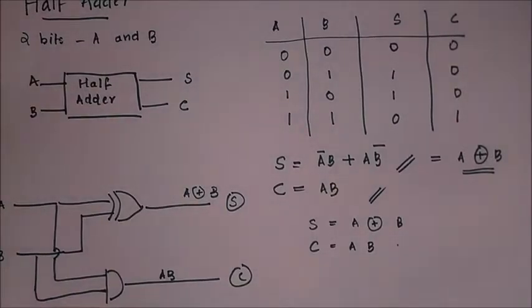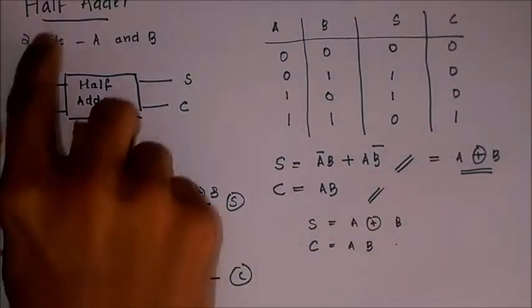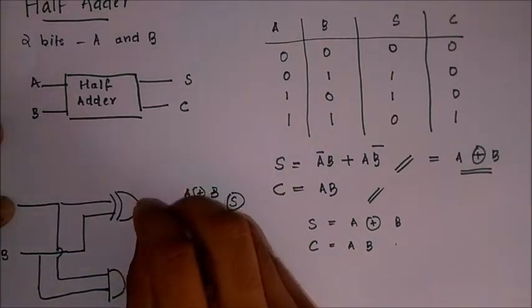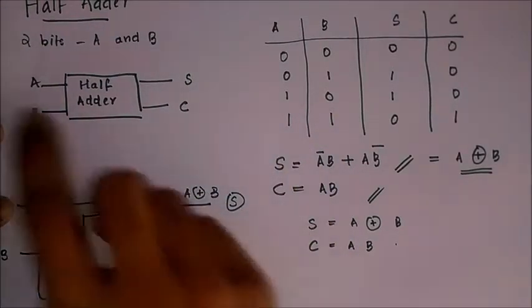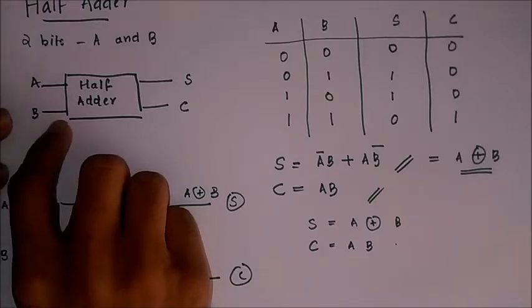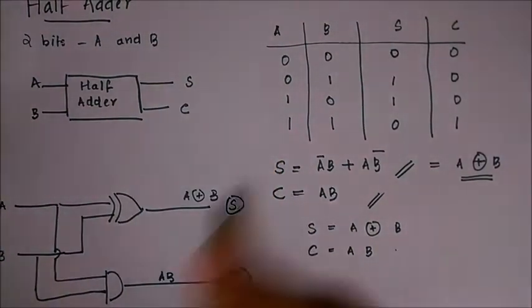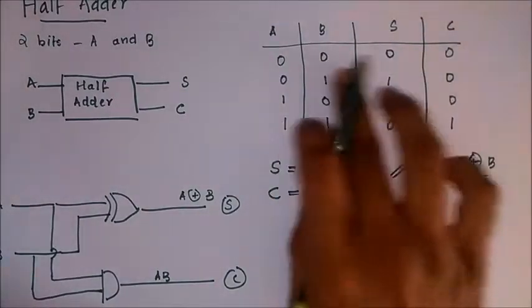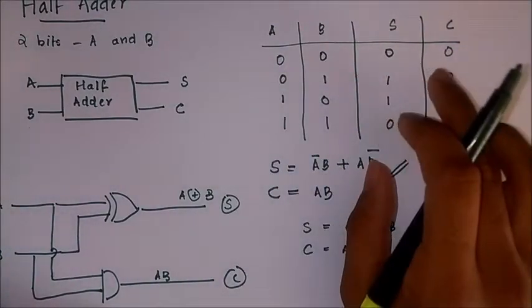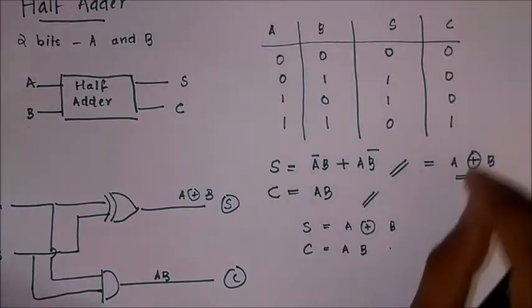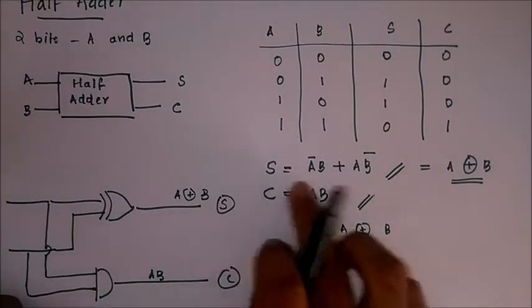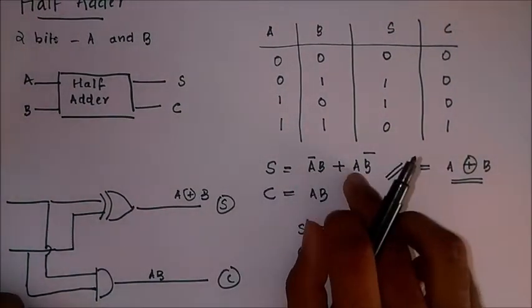So this is all about half adder. Let me bring the whole procedure once more. In half adder we have two single bit inputs A and B. Therefore two bits are given as input and we get a sum and carry as the output. On drawing the truth table, we can get the combinations of inputs for different sums and carry, and from that truth table we can write the expressions for sum and carry.